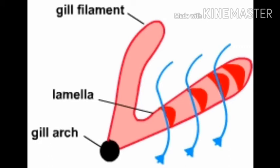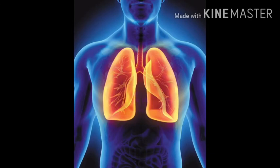Insects have a fine system of air tubes running to all parts of the body. This tube is called the trachea. Oxygen reaches the tissues through this trachea, which is branched inside the body, and the inner end is open to receive oxygen — that opening is known as a spiracle.